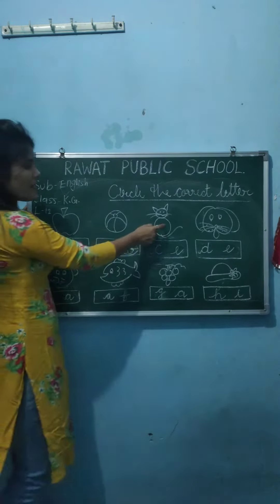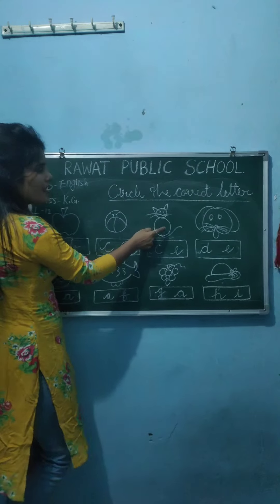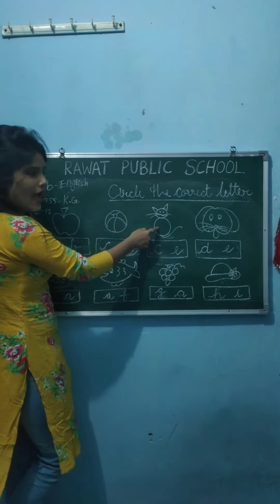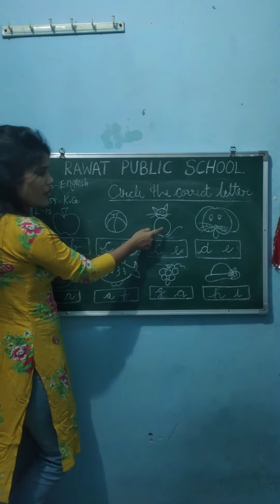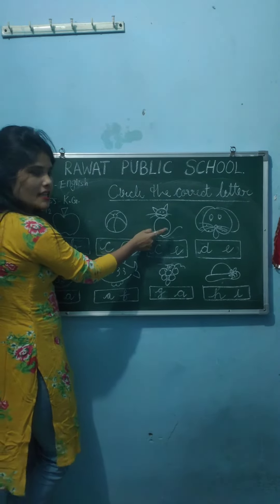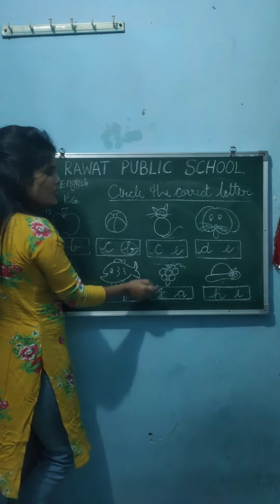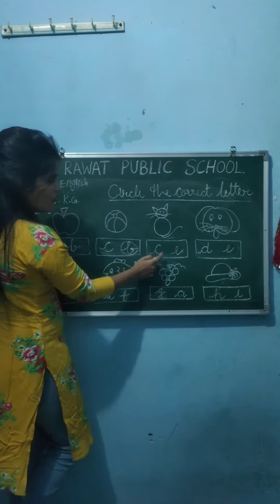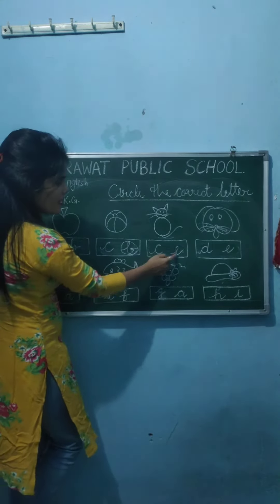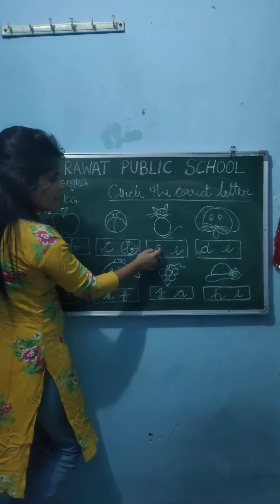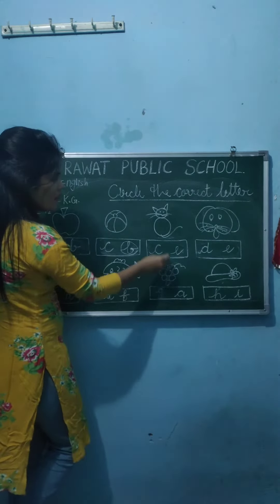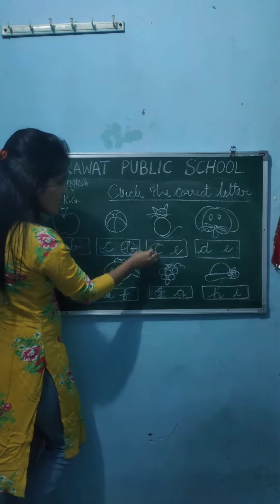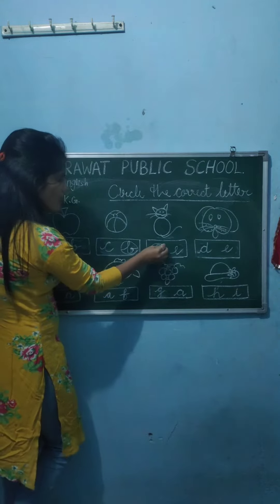Now what is this? This is cat. What is this? This is cat. C for cat. Which one is C? This one. Make a circle. Yes.